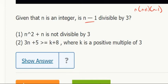So, is n minus 1 divisible by 3? Number 1 says n squared plus n is not divisible by 3. So that's n times n plus 1 is not divisible by 3. Well, that means n minus 1 must be because one of those three terms has to be divisible by 3.